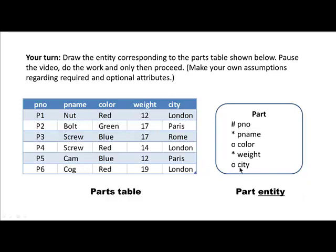This is what I came up with: part number is a key, every part requires a part number and weight, and color and city are optional. You might have done something different — that doesn't matter. So long as you got the rectangle with the name 'part' and with the five attributes, you're doing pretty fine. For every attribute you should have put something — part number you should definitely have identified as the key, and for the remaining ones you should have put optional or required depending on your choice. Here, what we are doing is looking at the table and then drawing the entity, but in the real world you will first talk to people, analyze the business situation, identify the entities, and only then the tables will be created.